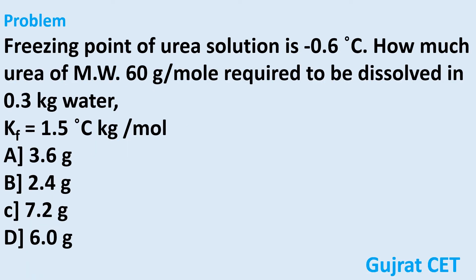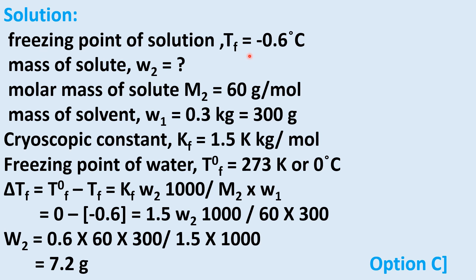The freezing point of a urea solution is −0.6°C. How much urea (molecular weight 60 g/mol) is required to be dissolved in 0.3 kg of water? Kf = 1.5°C·kg/mol. Option A: 3.6 g. Option B: 2.4 g. Option C: 7.2 g. Option D: 6 g. Mass of solvent W1 = 0.3 kg = 300 g. Freezing point of water T0f = 0°C.